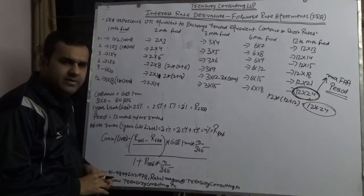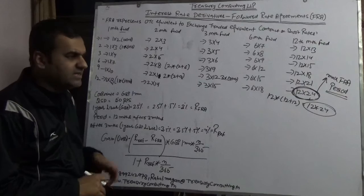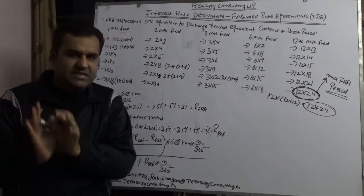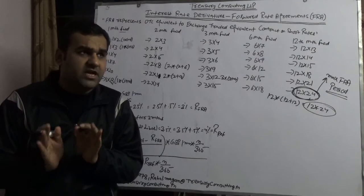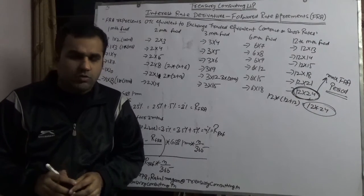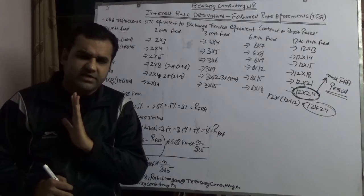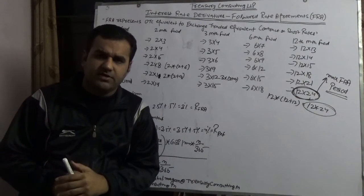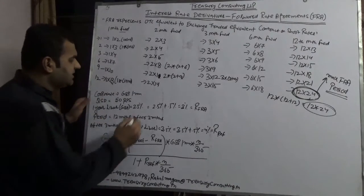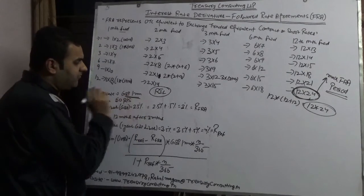We are taking an example of Reliance Industries Limited. In the Indian context, Reliance Industries' treasury has very good exposure to interest rate derivatives — including overnight index swaps and FRAs. They run their treasury like a hedge fund, dealing in options, certificates of deposit, and commercial paper.